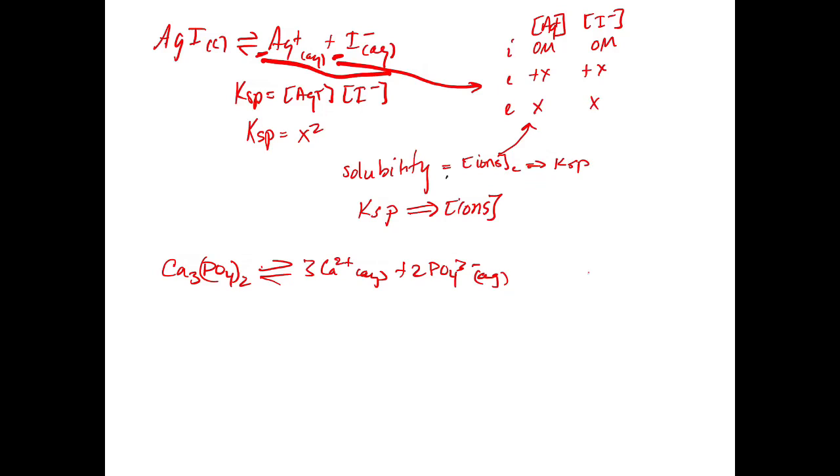So when we set up our ICE table for this, and we have our calcium two-plus, and we have our PO4 three-minus, and we write I, C, and E. In this case, again, we're going to start with zero molar and zero molar because before we dissolve it, there's not going to be anything in solution.